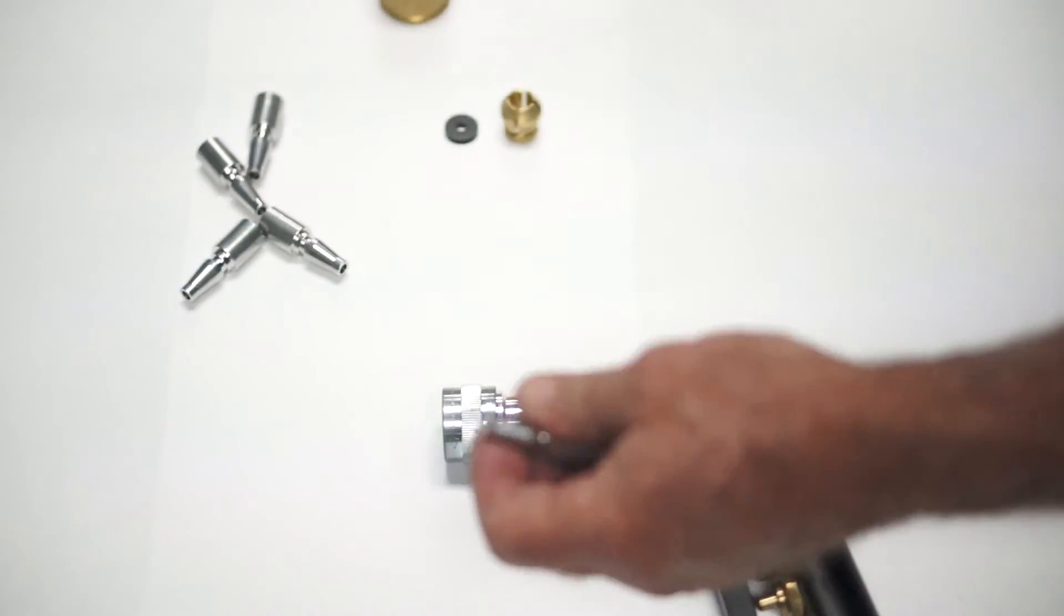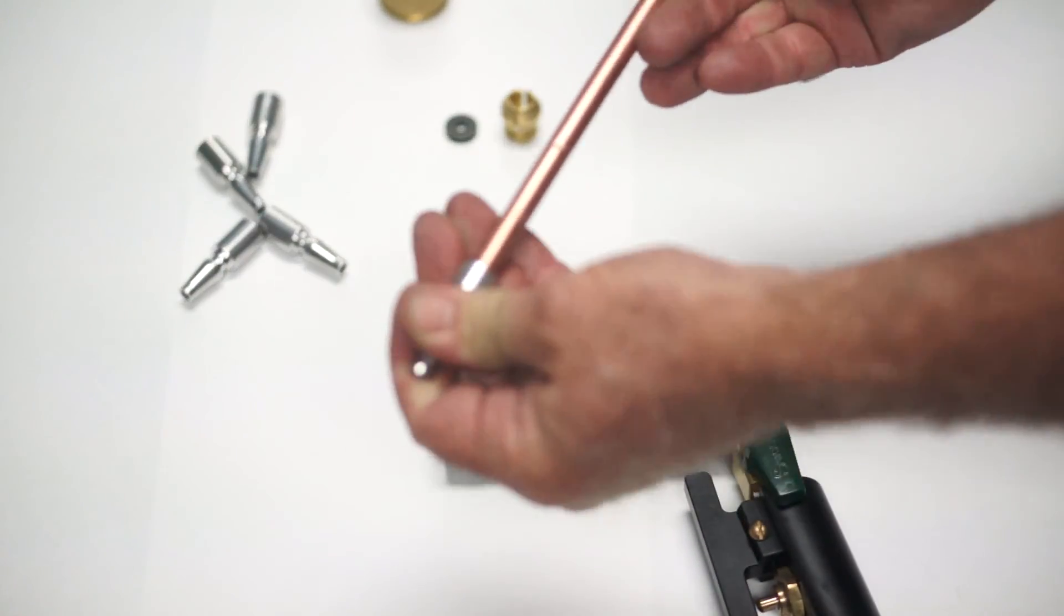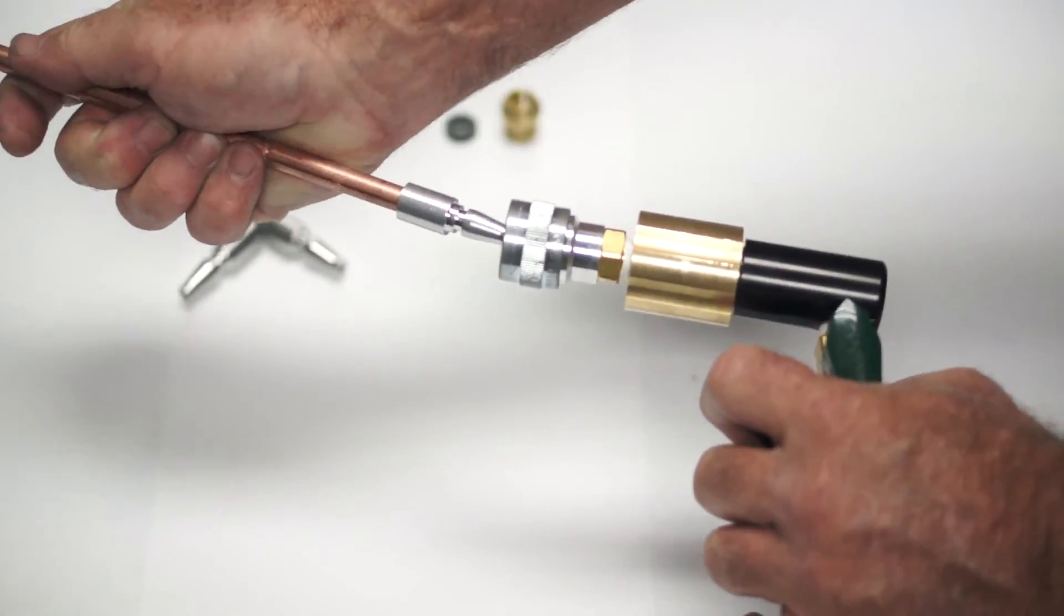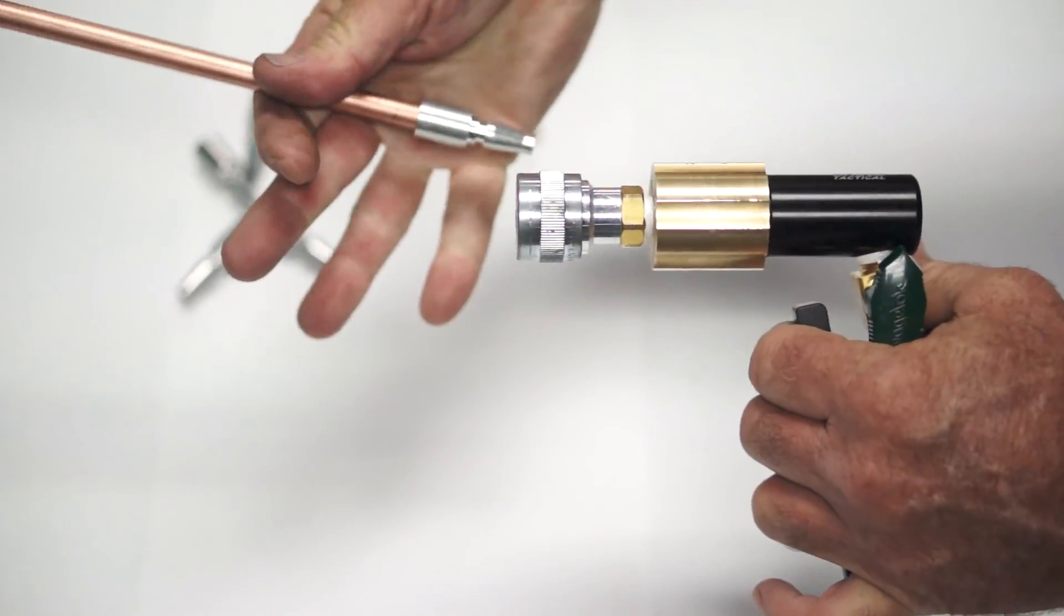Again, this fits any 3/8 Broco rod. Just push it on the end. Rod goes in, twist, and the rod comes out.